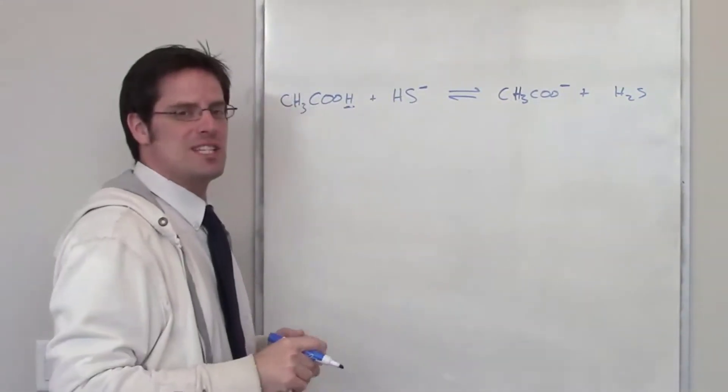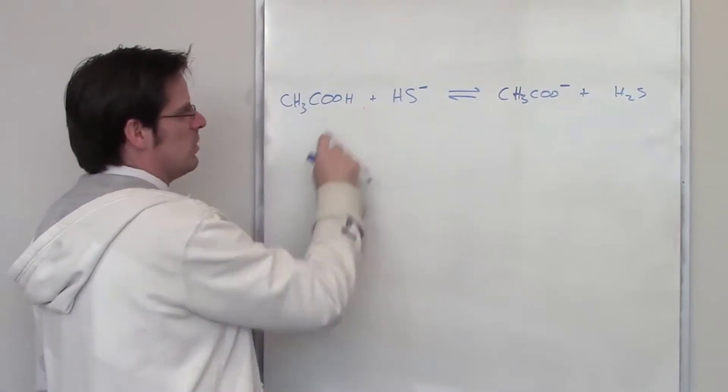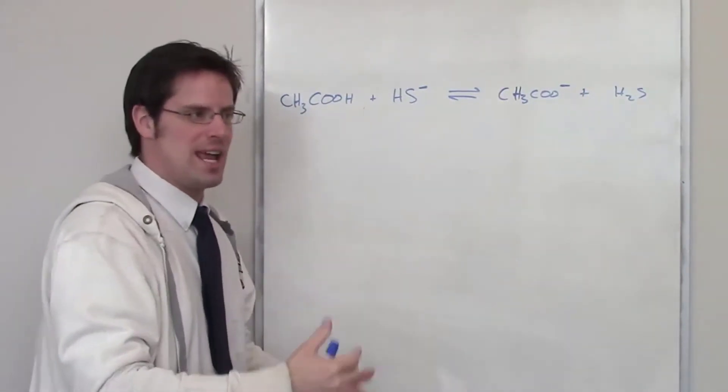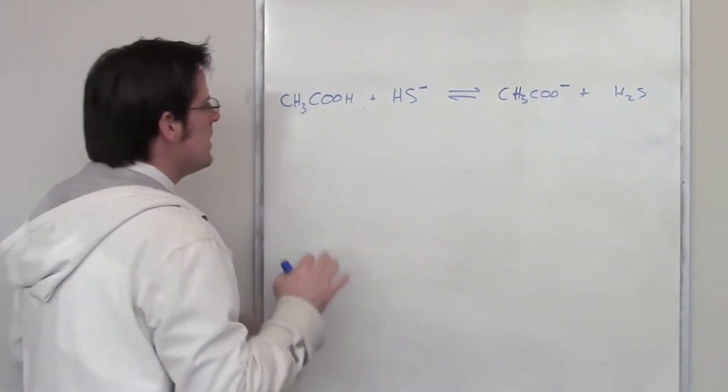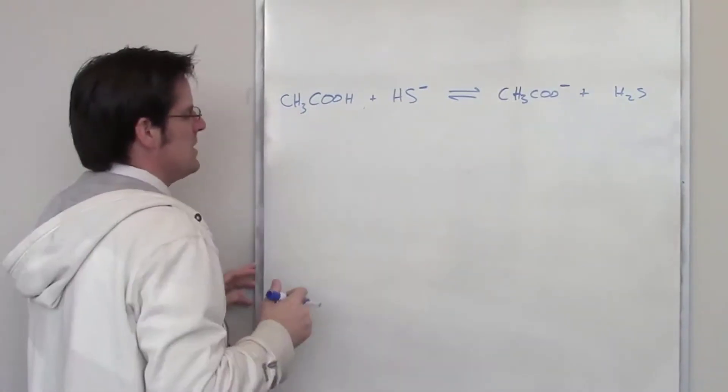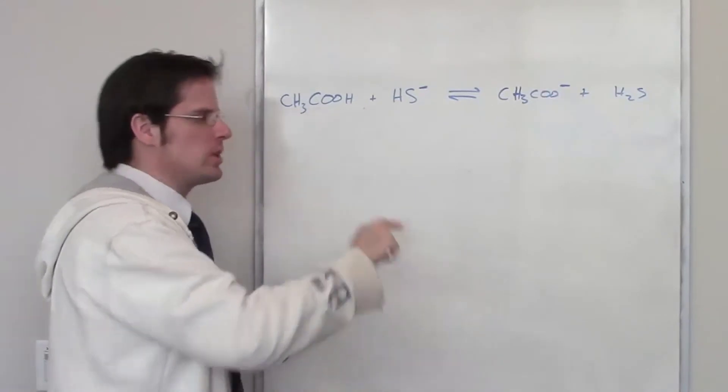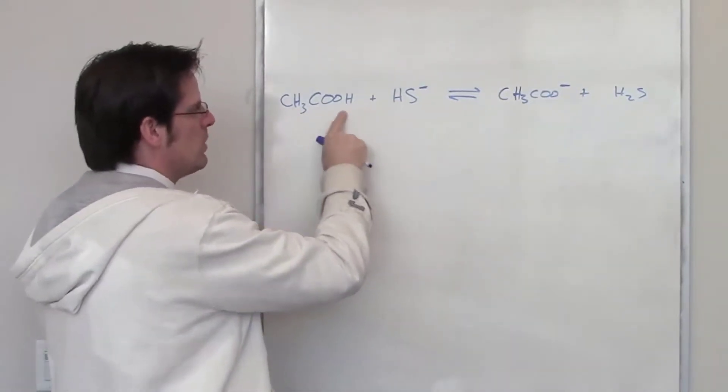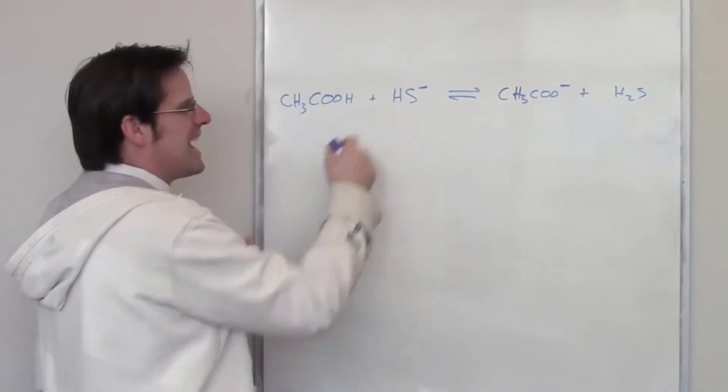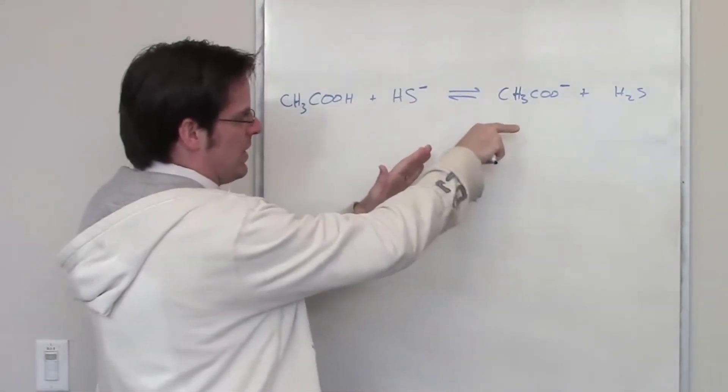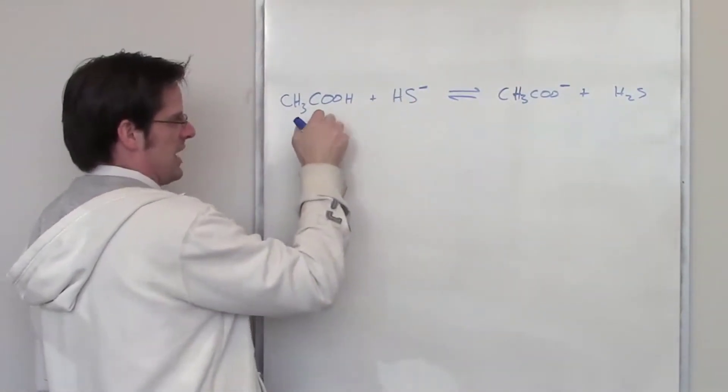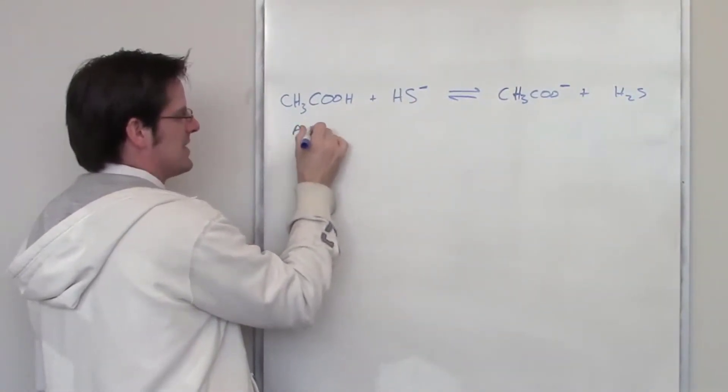The next thing we need to do is determine which thing is the acid, which one's the base, what's the conjugate acid, and what's the conjugate base. As I talked about in an earlier video, the acid is the thing on the left side of the equation that gives up a hydrogen as you move to the right. Which of these two things gave up a hydrogen as it went over to the right? Yeah, it's this thing. So this molecule is the acid.